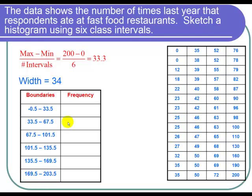So now let's compute our frequencies. We go to our data and we count how many values are between negative 0.5 and 33.5. And 0 is certainly in between those. So counting them up, we get 12, and 35 is not in that interval. So there are 12 for that frequency.